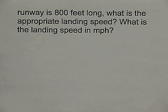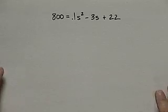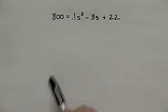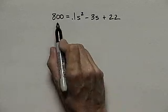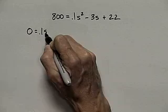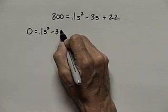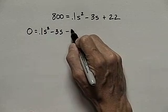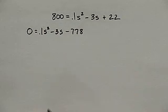What we're going to do is substitute 800 for D in our model. That gives us an equation that looks like 800 equals 0.1 S squared minus 3S plus 22. This is a quadratic equation. Let's set it equal to 0 by subtracting 800, which gives us 0.1 S squared minus 3S plus 22 minus 800 is minus 778.